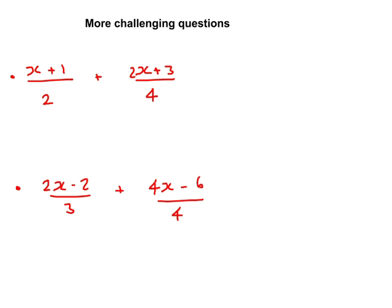And then the last questions we'll look at. A couple of more challenging questions. So this time I've got a 2 and I've got a 4. So I'm going to try and make this bottom number here into a 4 as well. Well, if I make this 4, then I have to times the top by 2. So times this by 2, times the top by 2 as well. Now, x plus 1 times by 2 gives me 2x plus 2, times everything by 2.